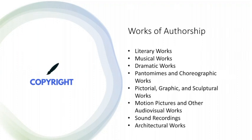Works of authorship are the types of works that are eligible for copyright protection. Literary works include written works such as poems, novels, and even academic writings. Musical works include song lyrics and even underlying musical compositions. Dramatic works include plays, musicals, and other theatre-type productions. Pantomimes and choreographic works in modern times primarily consist of recorded choreography, but still include pantomimes, which are basically speechless performances to music. Pictorial, graphic, and sculptural works are comprised of what most would call fine arts, including paintings, photographs, and sculptures.